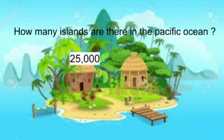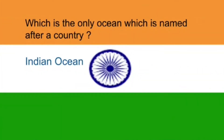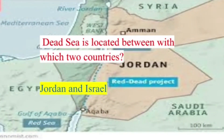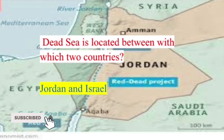How many islands are there in the Pacific Ocean? About 25,000. Which is the only ocean named after a country? The Indian Ocean. The Dead Sea is located between which two countries? Jordan and Israel.